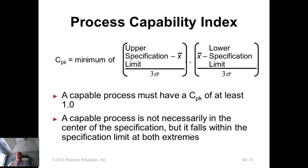But we don't yet know whether the process is actually capable. For that, you need to compute the process capability index, which goes by the notation C sub pk. You divide the specification into two parts — upper specification to midpoint, and midpoint to lower specification — then divide by three times the standard deviation, and select the minimum of the two. If this is one, then it is barely meeting the specification, and the process will not be considered capable. The minimum standard is 1.33.